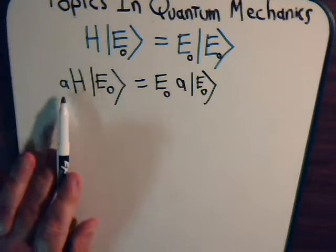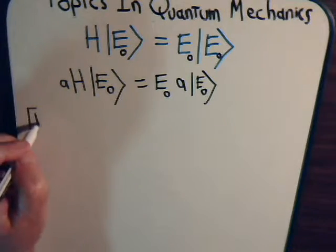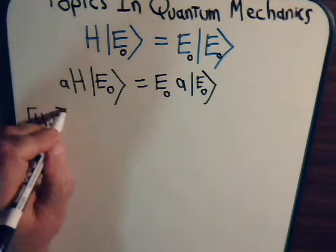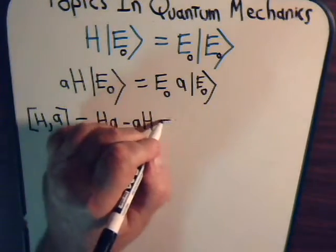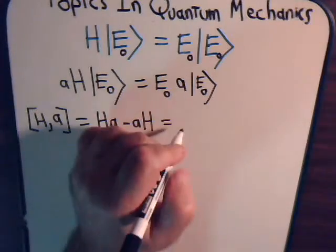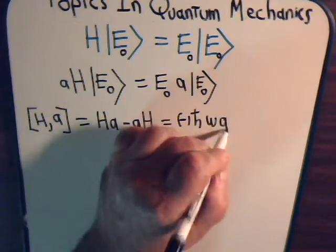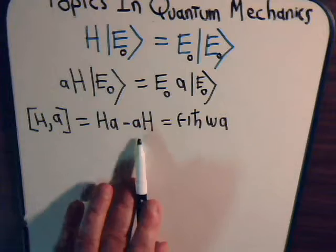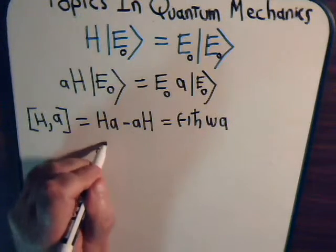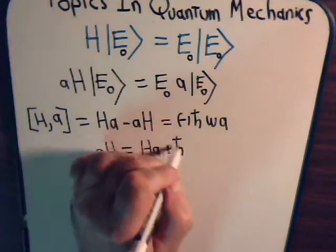Now look at this. We have A times H. It was in the last video, video number 24, where we determined that for this commutator, which is HA minus AH, that commutator equals minus ℏω A. For ℏ, of course, is Planck's constant divided by 2π. That means now we can solve this for AH.